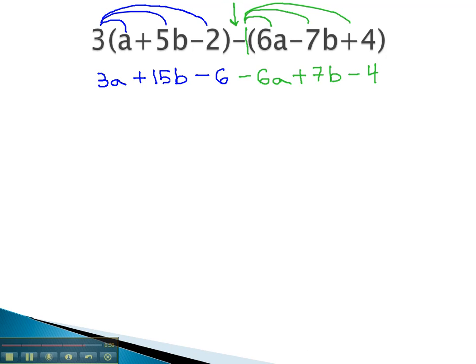Now, we're ready to go back and combine our like terms. Just going left to right, we have 3a, and what's like it is the negative 6a. This leaves behind negative 3 of these a's. We also have 15b's, which is like the 7b's. 15 and 7 gives us positive 22 of these b's.